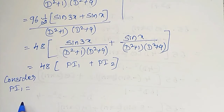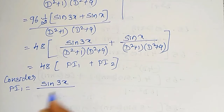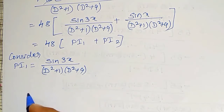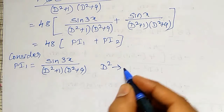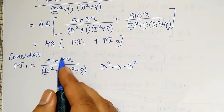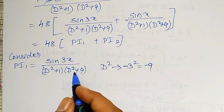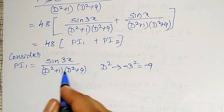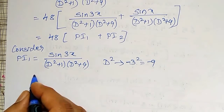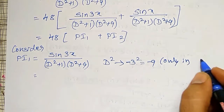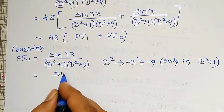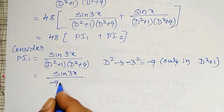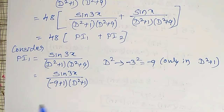Consider PI1 equals sin 3x divided by d squared plus 1 into d squared plus 9. Since sin 3x is there, d squared must be replaced by minus 3 squared, which is minus 9. If I substitute d squared equal to minus 9 in the second factor d squared plus 9, it becomes 0, so I substitute only in the first factor d squared plus 1.